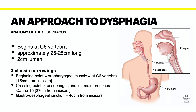The first narrowing is at the beginning point of the esophagus at the C6 vertebra, typically 15 centimeters from the incisors. The second classical narrowing is the crossing point of the esophagus and the left main bronchus at the carina at the level of T5, typically about 27 centimeters from the incisors. Finally, the gastroesophageal junction where the esophagus passes through the diaphragm is roughly 40 centimeters from the incisors, corresponding to the xiphoid process of the sternum and in line with the T11 vertebra.